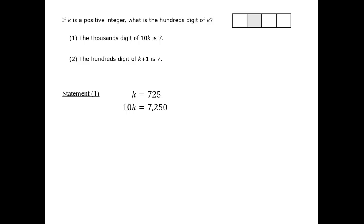Since multiplying by 10 adds the digit 0 onto a number and shifts the existing digits to the left, then the thousands digit of 10k will always equal the hundreds digit of k. Statement 1 therefore gives us sufficient information to answer the question.